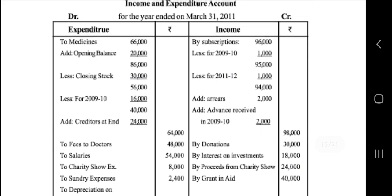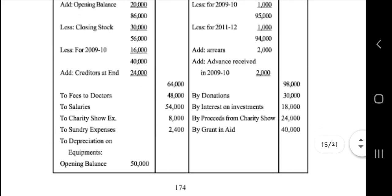Here also: 96,000 minus 1,000 is 95,000; 95,000 minus 1,000 is 94,000; 94,000 plus 2,000 is 96,000; and totally 98,000.